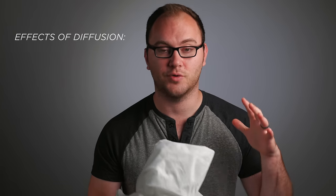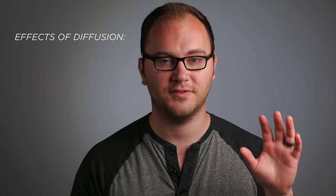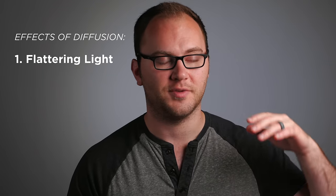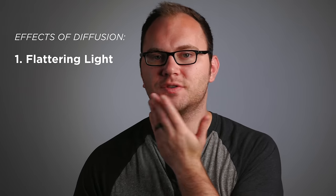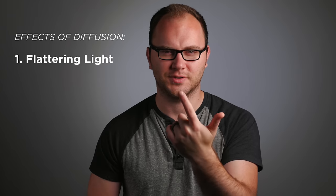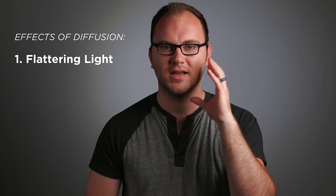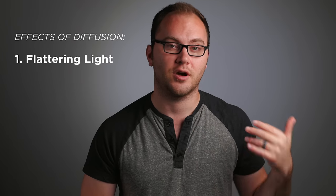There are also several effects diffusion will have on your footage and what things look like. First and foremost, soft light is a more flattering light. So if you use soft light on a person or an object, it kind of smooths everything out. Wrinkles aren't really well defined. The size of people's noses and heads and things are just kind of smoothed over. So it's much more flattering than using harsh light.